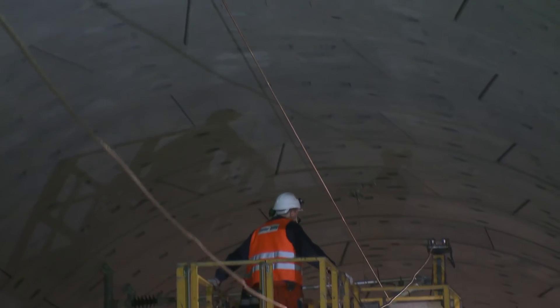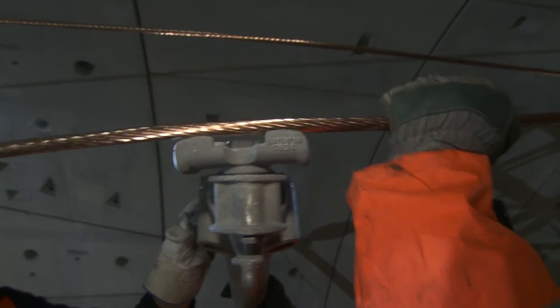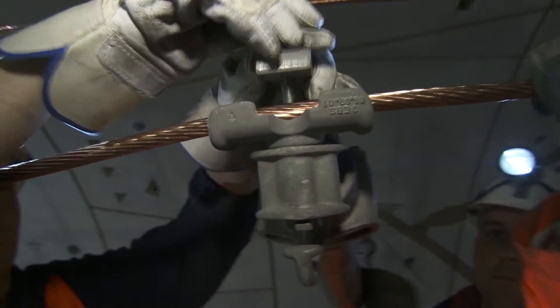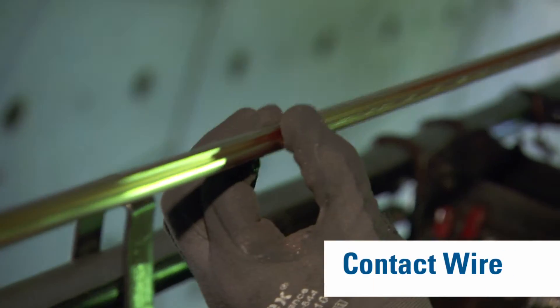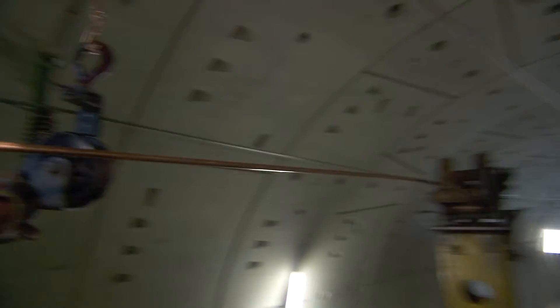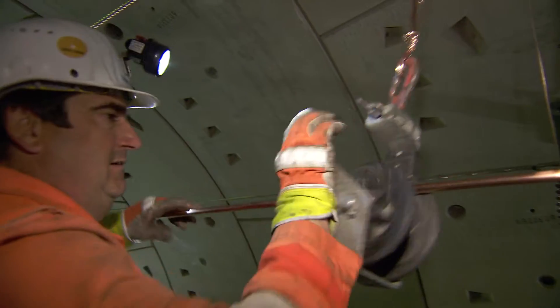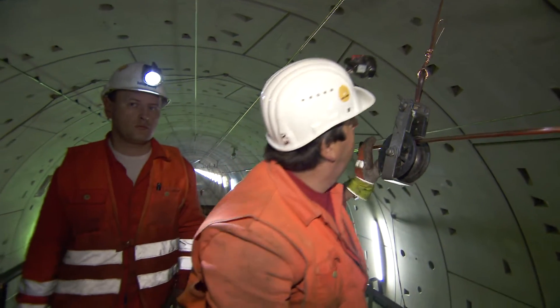What looks simple and inaccurate at first glance will become a high-precision overhead contact line by the end of the day. Because whether the train will be evenly supplied with power depends on the location of the contact wire. The specialists from Balfour Beatty Rail work with the highest concentration as they draw in first the catenary wire and then the contact wire.